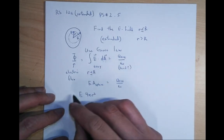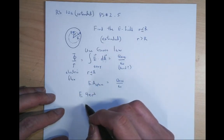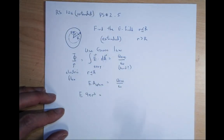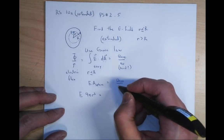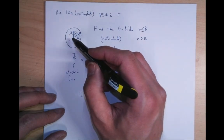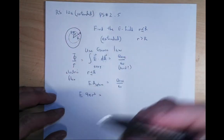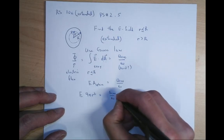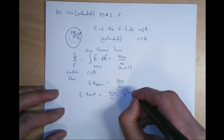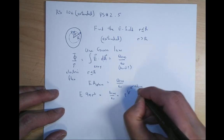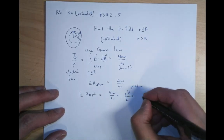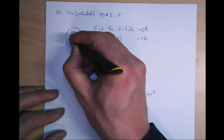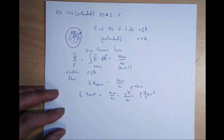So it's E times 4πr² equals Q enclosed over epsilon naught. This side is always going to be the same — true for r less than R, and also for r greater than R. What is Q enclosed? Normally I tell you the entire thing has charge Q, but this time I only told you the charge density rho. So Q enclosed is just the density times the volume, which is rho times (4/3)πr³, where r is the little radius inside the Gaussian surface.